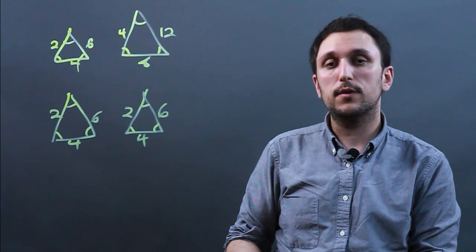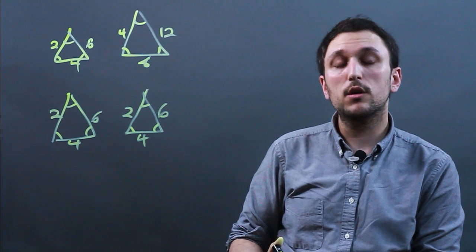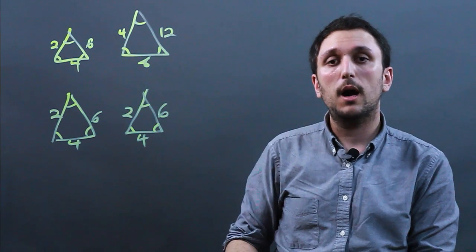So you've just learned the difference between congruent triangles and similar triangles. Congruent triangles have to be exactly the same, similar triangles just have to have the same angles. I'm Charlie Kasov. Thanks a lot.